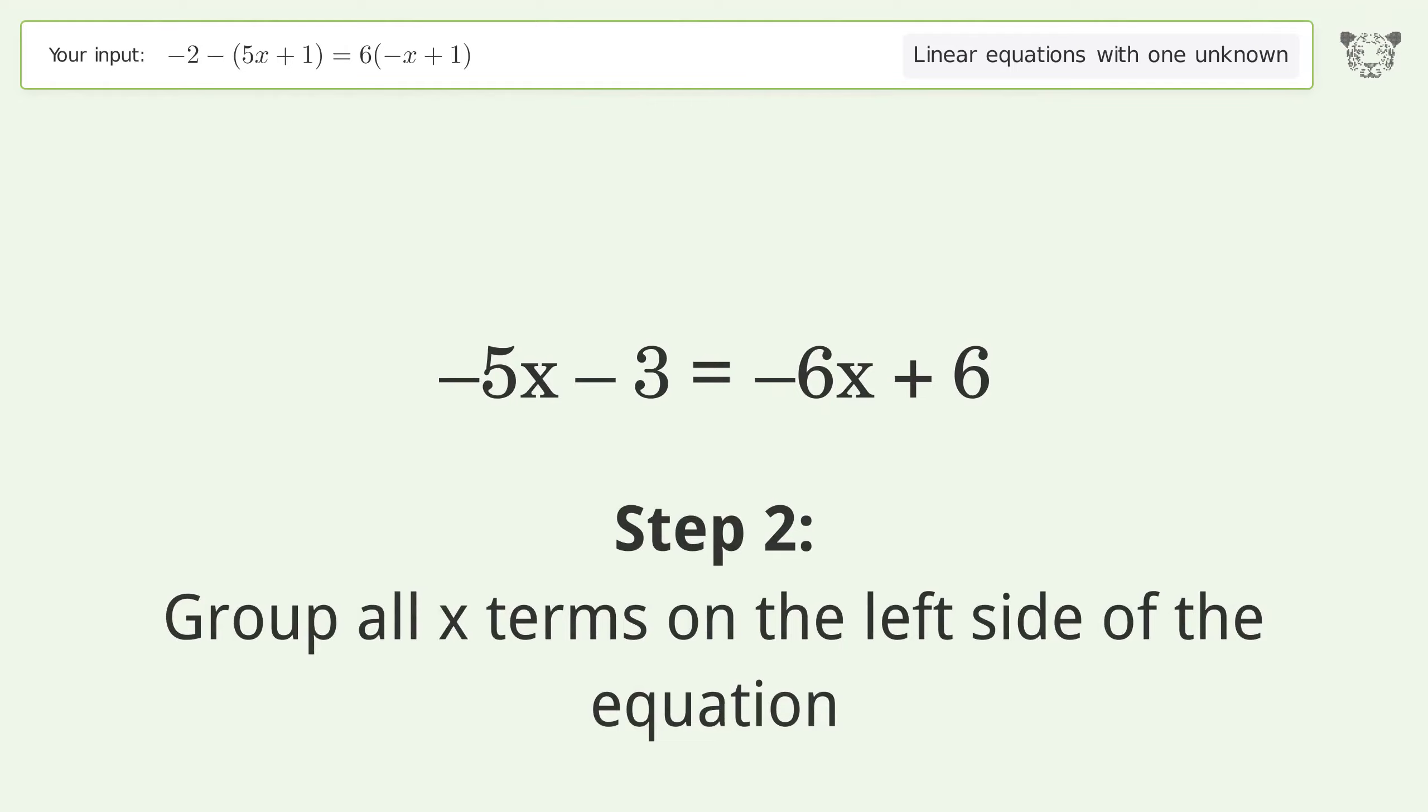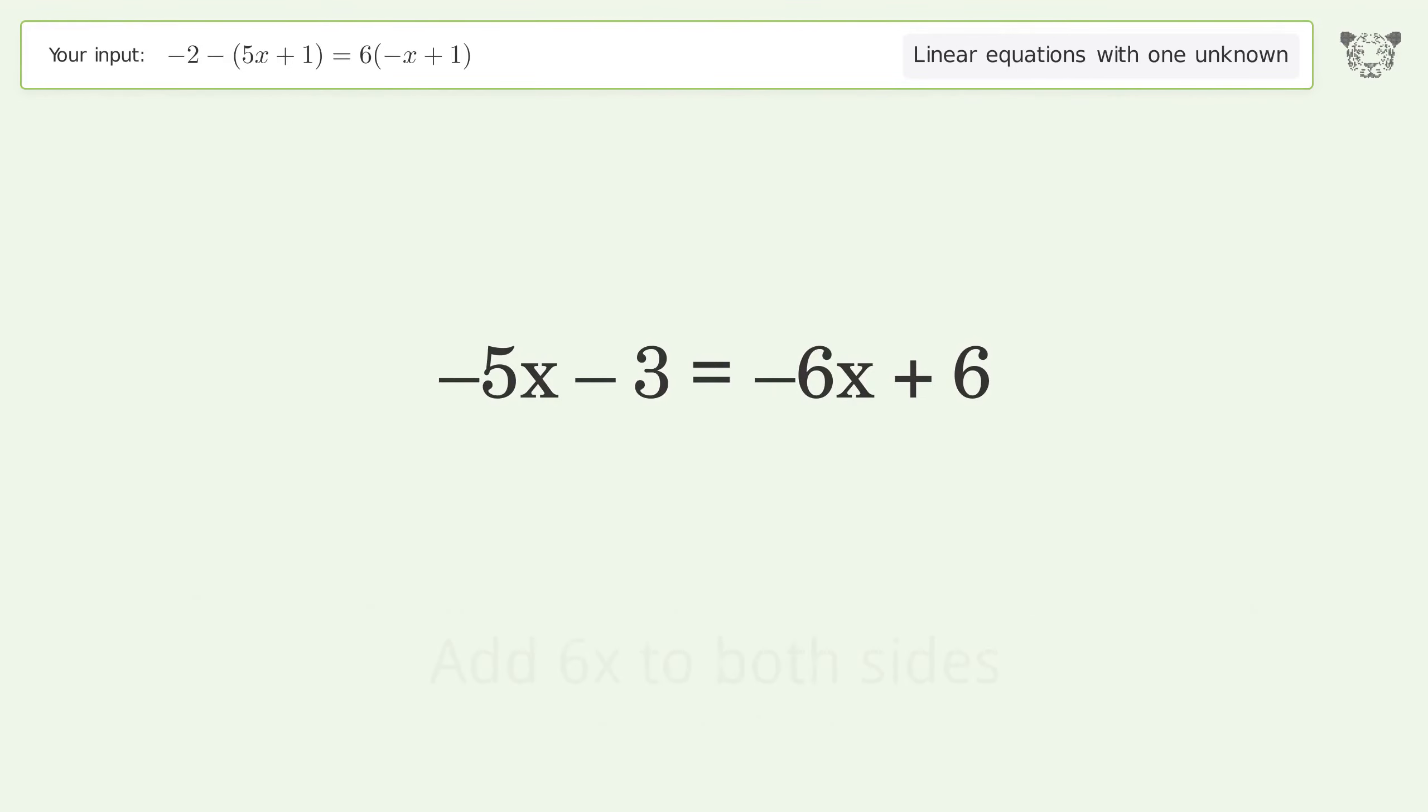Group all x terms on the left side of the equation. Add 6x to both sides. Group like terms. Simplify the arithmetic.